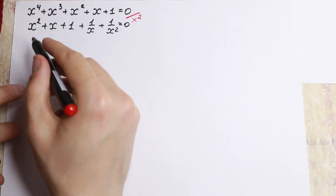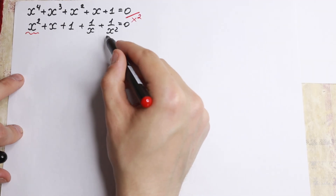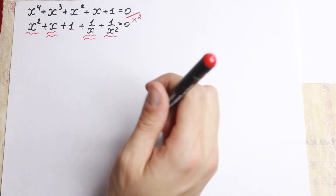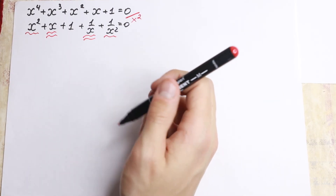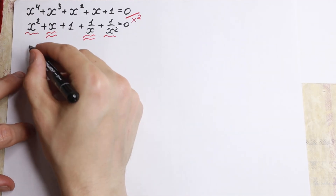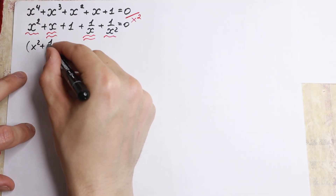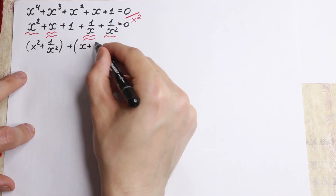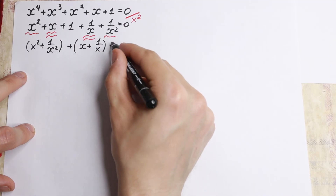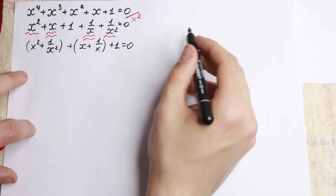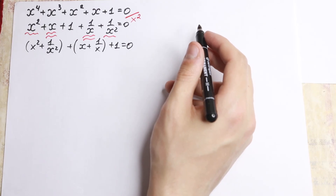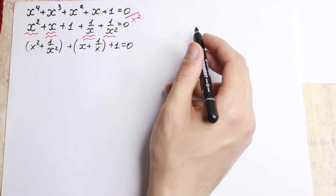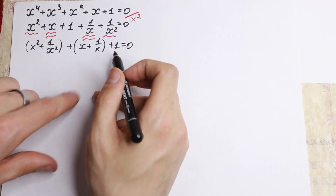I see right here squares and also x and 1 over x — the same pattern. So let's group these elements. We'll have: x squared plus 1 over x squared, plus x plus 1 over x, plus 1, equal to zero. So I just grouped the squared terms and the linear terms.